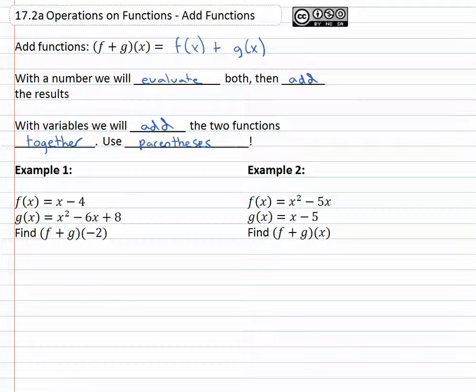So for example here, we're told f(x) = x - 4, g(x) = x² - 6x + 8, we're asked to find (f+g)(-2). What that really means is find out what f(-2) is and add to it whatever g(-2) is.